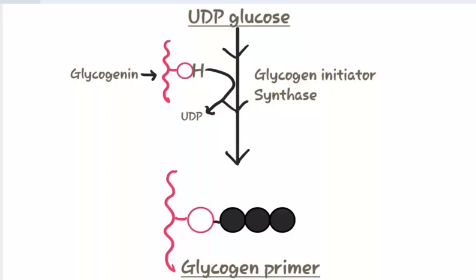To initiate the process of glycogenesis we require a primer. Generally the pre-existing small fragment of glycogen acts as a primer. But in the absence of that small fragment of glycogen, a protein named glycogenin accepts the glucose molecule from UDP and forms a primer. Thus glycogen initiator synthase transfers the first molecule of glucose to glycogenin.